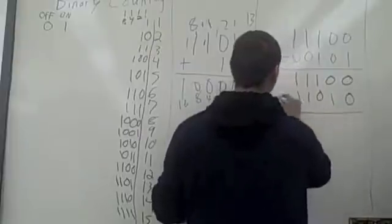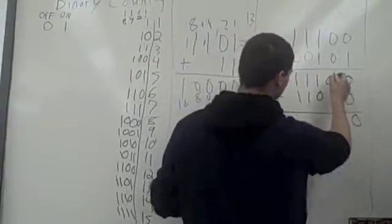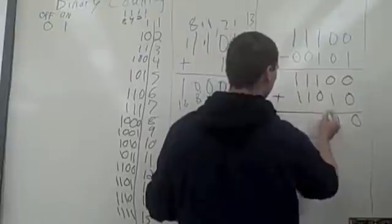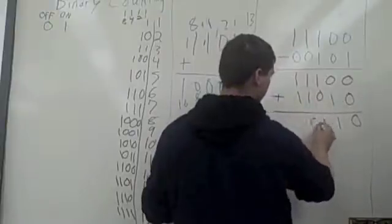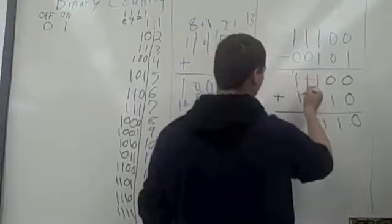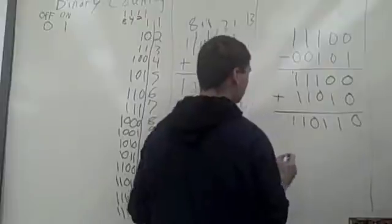Now you're going to add these. 0 plus 0 is going to give you 0. 0 plus 1 is 1. 1 plus 0 is 1. 1 plus 1, as Matt said before, so 0 carry 1. 1 plus 1 plus another 1 on top. 1 and 1.